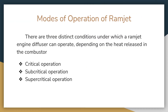The modes of operation of a ramjet engine — there are three distinct conditions under which a ramjet engine diffuser can operate, depending on the heat released in the combustor or combustion chamber. The three conditions are: the first one is critical operation, the second one is subcritical operation, and the last one is supercritical operation.